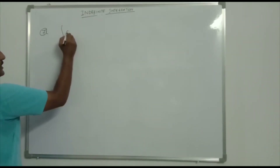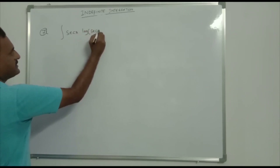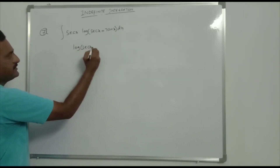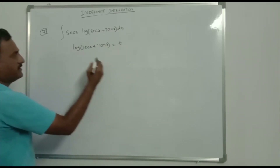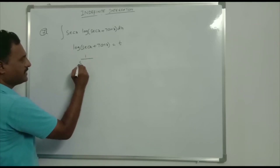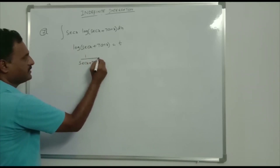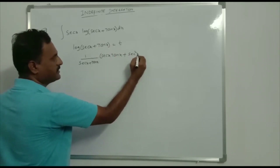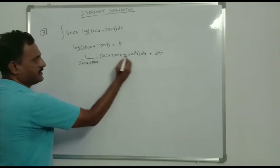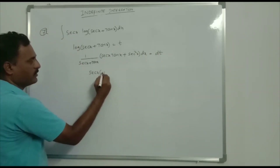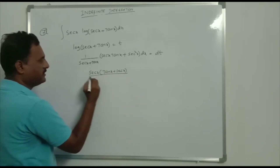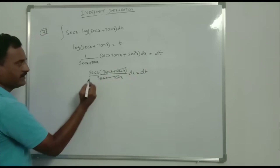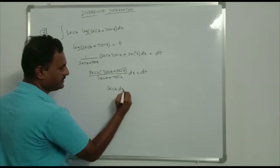Integration of sec x · ln(sec x + tan x) dx. Let t = ln(sec x + tan x). Take differentiation on both sides: derivative of ln(sec x + tan x) is 1/(sec x + tan x) · (sec x·tan x + sec²x) dx = dt. Taking sec x common: sec x·(tan x + sec x)/(sec x + tan x) dx = dt. The (tan x + sec x) terms cancel, giving sec x dx = dt.